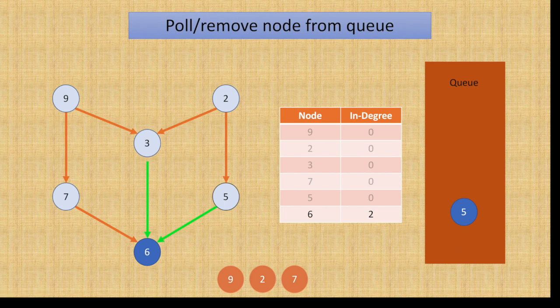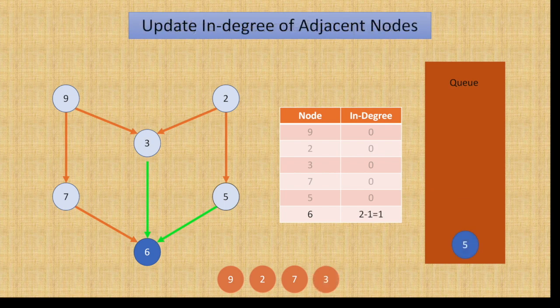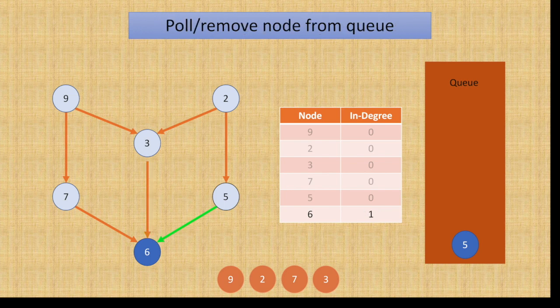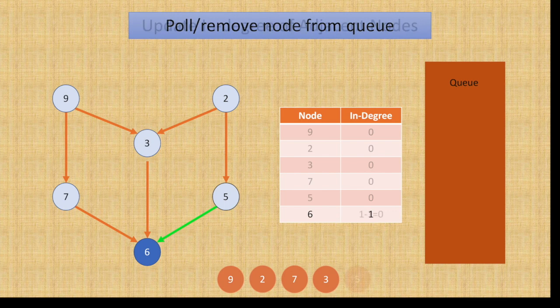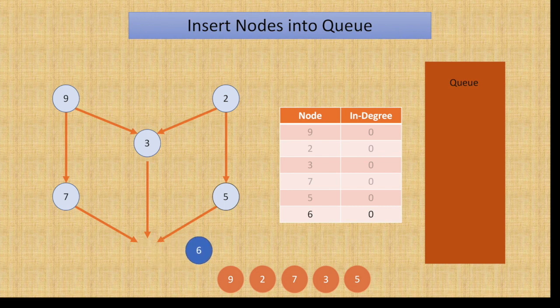This time it will be node 3, and we'll repeat the process of updating the in-degree. The new in-degree for node 6 will be 1 now. And similarly, we'll poll the last node inserted in our sorted array and update the edge. Finally, node 6 has an in-degree of 0. We'll insert it into the queue.